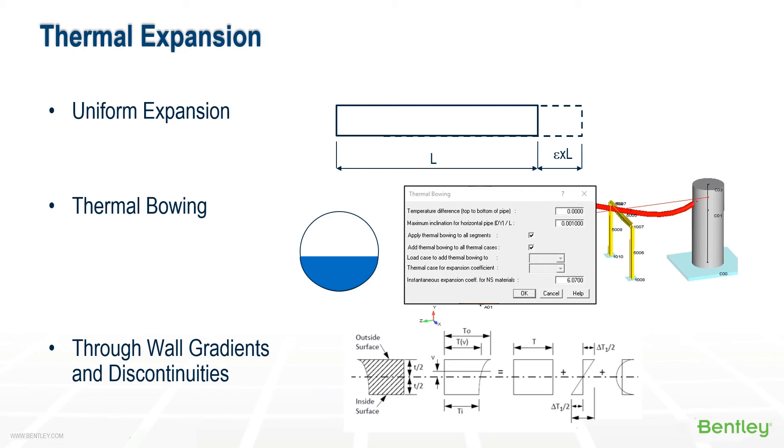Thermal discontinuity stresses occur when the gradient is different at a point due to material or geometric changes.